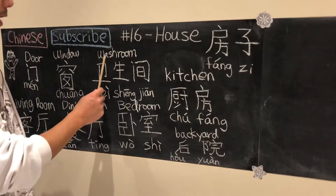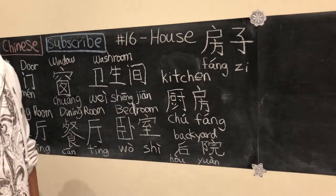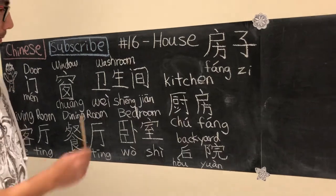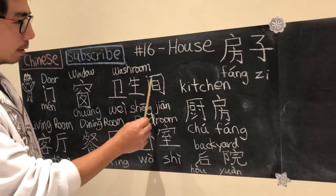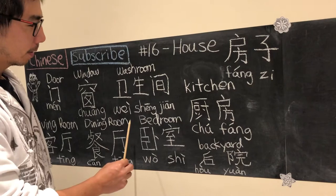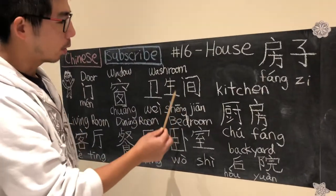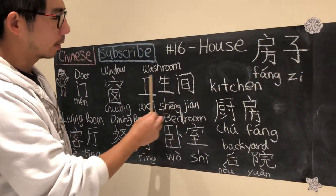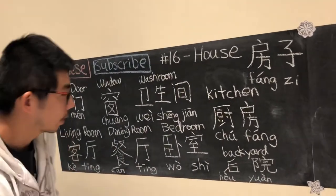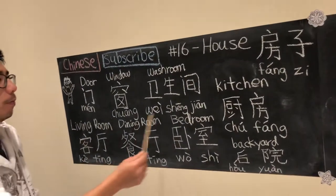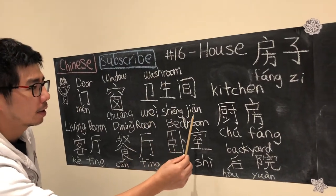Next we have the washroom. There are different ways to say the washroom, and this is just one of them, which is called 衛生间. 衛生 means hygiene or to clean, and 间 is one way to say a room. So the full word for washroom is 衛生间.